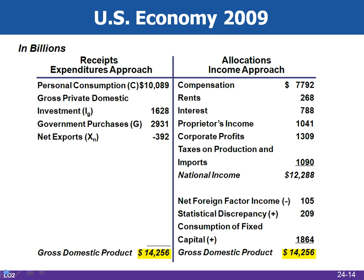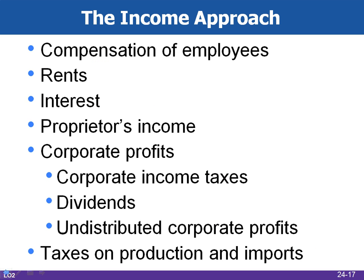This chart calculates GDP for 2009 using both the expenditures approach and the income approach. Note that both methods come to the same conclusion — the income approach just adds a few extra details that make it more complex. The income approach allocates expenditures as income to those responsible for producing the output — the workers.